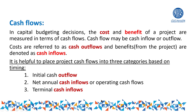Cash flows in a project are divided into three types: first, initial cash outflow — how much is paid at the start of the project; second, net annual cash inflow (operating cash flow) — how much inflow is received each year during the project's life; and third, terminal cash inflow — the inflow adjustments in the final year.